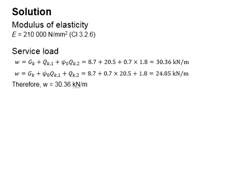You will assume one as a leading variable action while the other one as the accompanying variable action. Then, you swap their role between them. For the accompanying variable loads, there will be a reduction factor of 0.7.